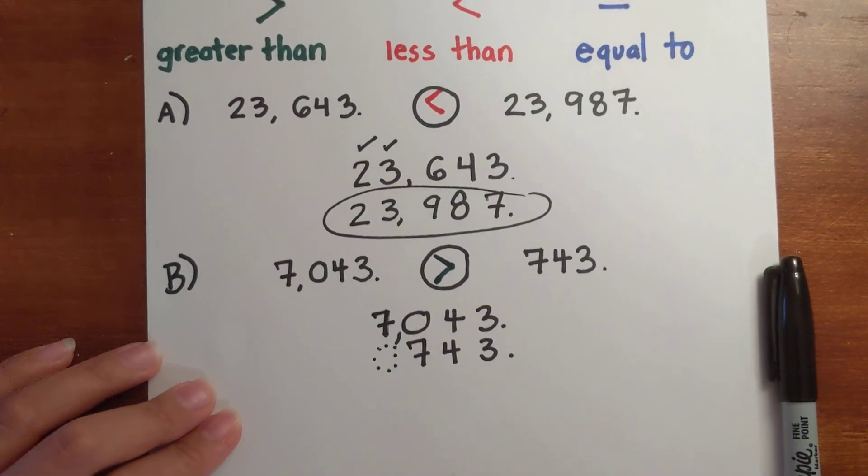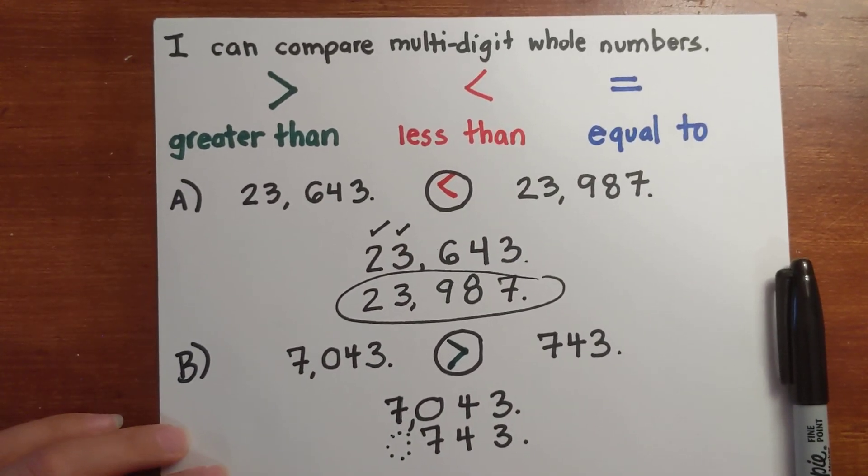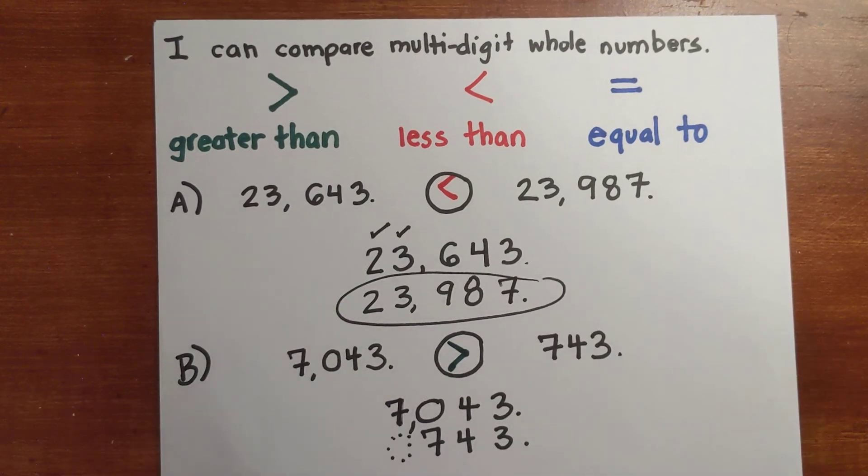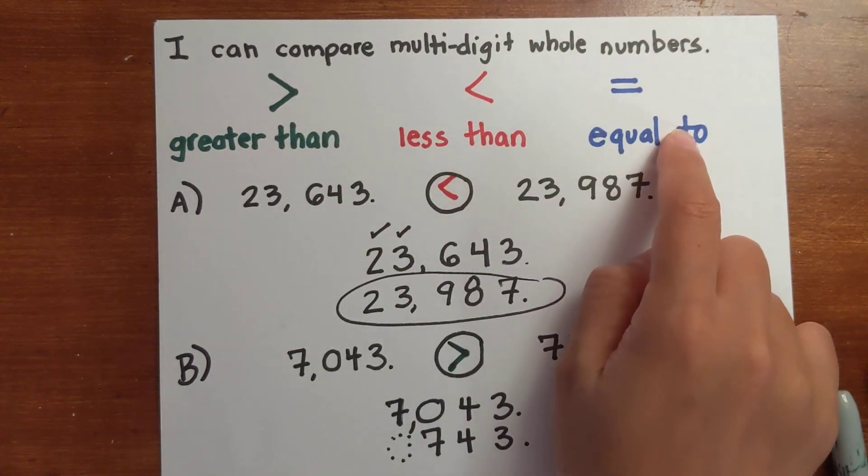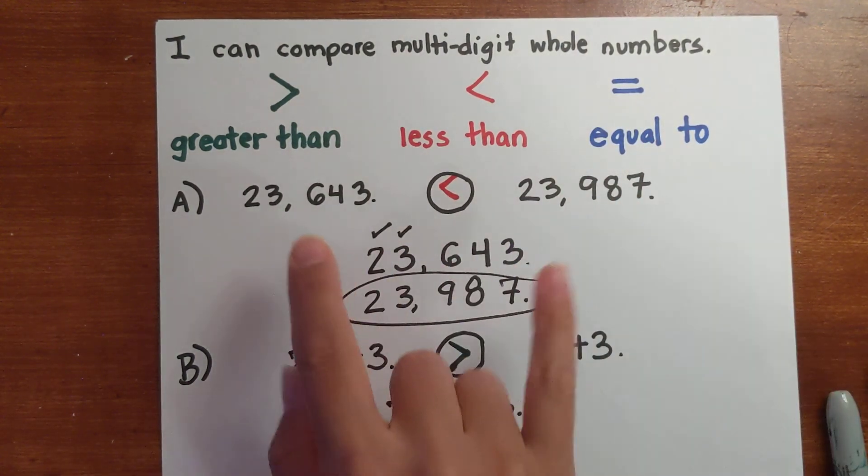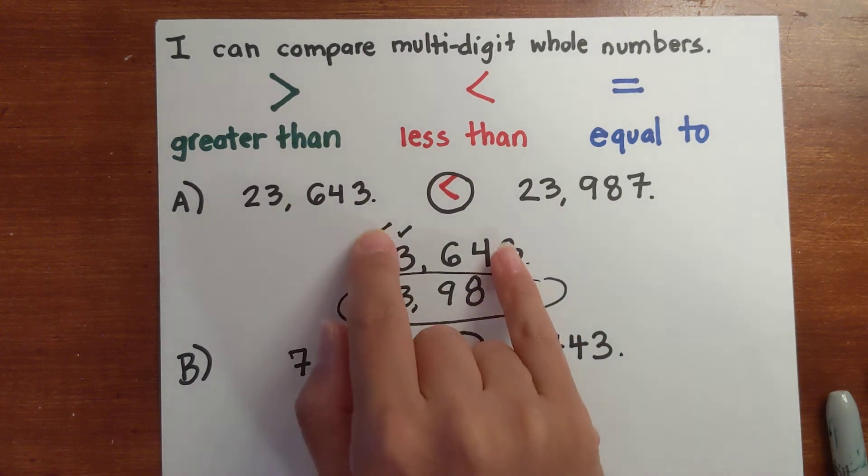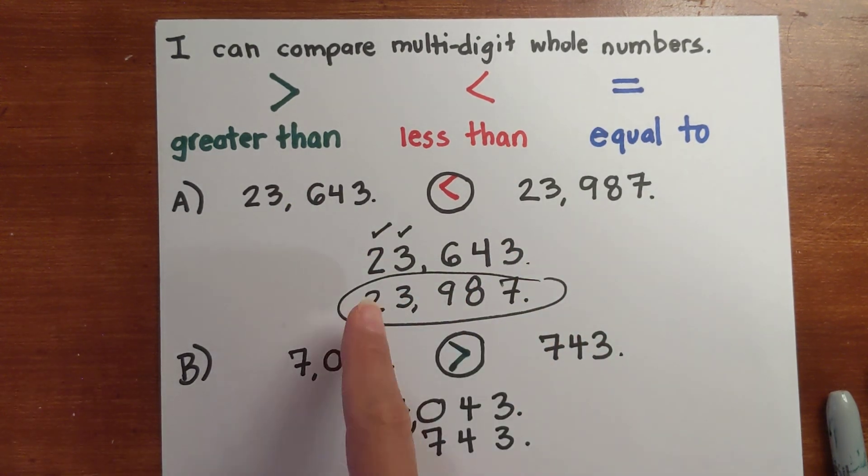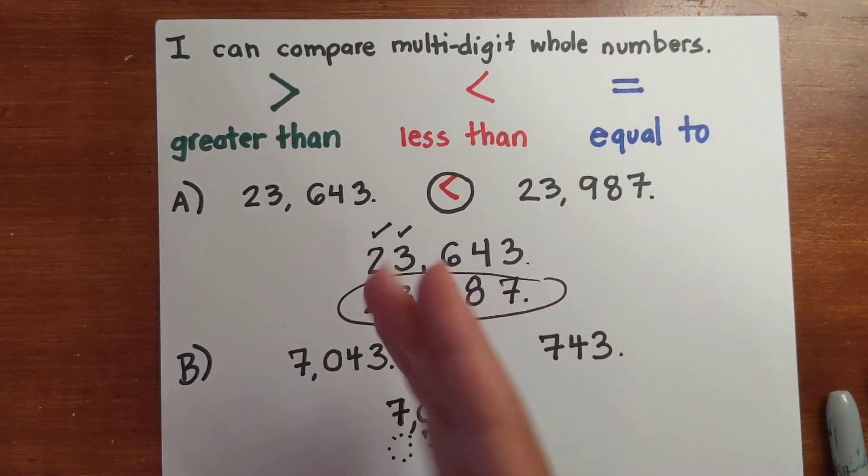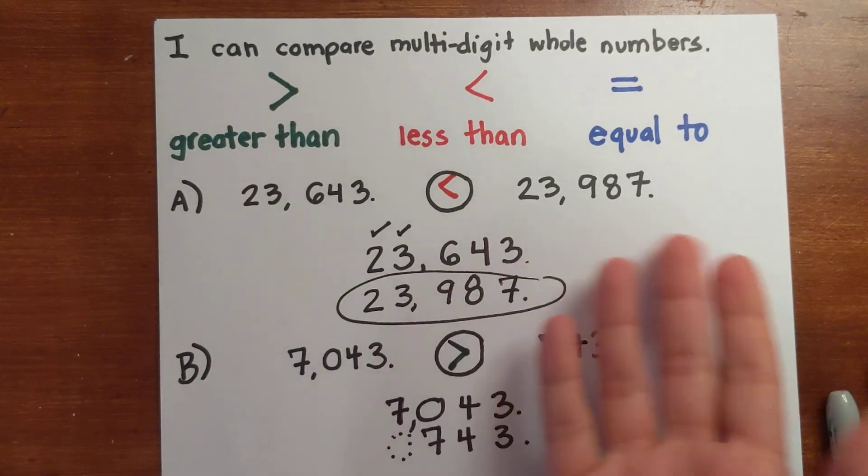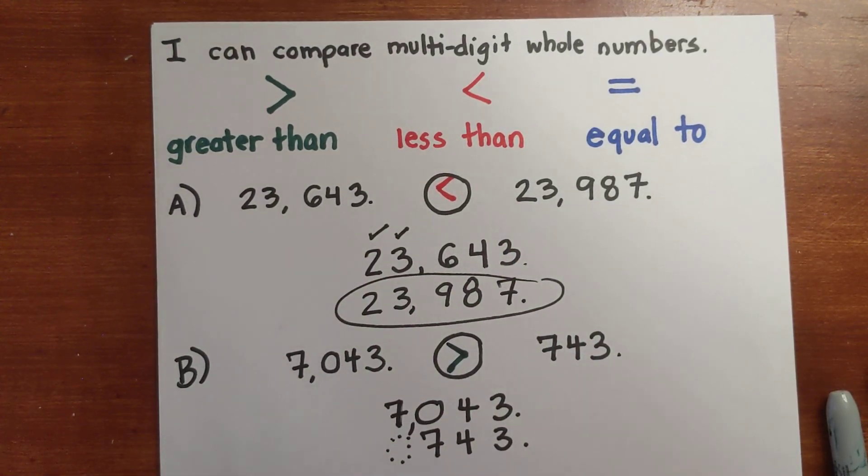It's a pretty short video, but we're looking at 'I can compare multi-digit whole numbers' using those three symbols: greater than, less than, and equal to. When you compare values, you're using one of those three symbols. And you always want to make sure when you compare your two values that you line up your place values and compare value by value, starting with your greatest and ending with your least, even if you don't need to get there.